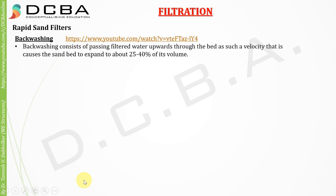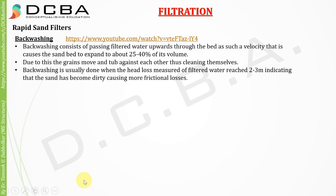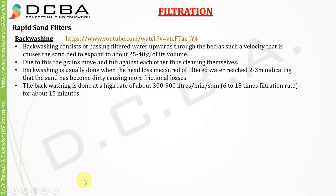Backwashing consists of passing filtered water upwards through the beds at such a velocity that it causes the sand to expand to 25 to 40 percent of its volume. Backwashing is usually done when the head loss measured across the filter reaches 2 to 3 meters, indicating the media has become dirty and friction losses have increased. The backwashing is done at a rate of about 300 to 900 liters per minute per square meter, which is 6 to 18 times the filtration rate, for about 15 minutes.